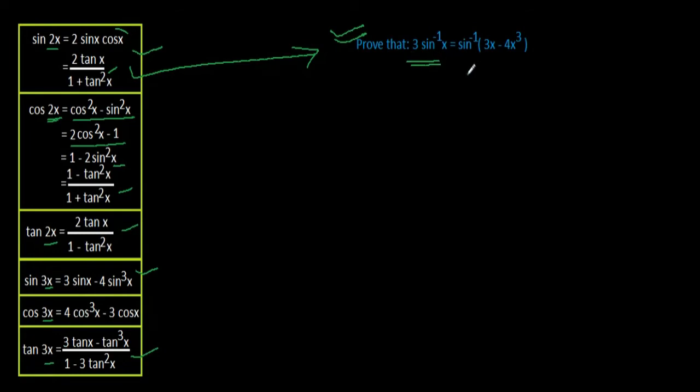sin⁻¹(3x - 4x³). See, the highest power inside this sine inverse is 3, so we'll be focusing on these 3 formulas only. As it is in one line, we don't have any denominator here, so we should not focus on this formula because it has a denominator. We'll be focusing on these two formulas.